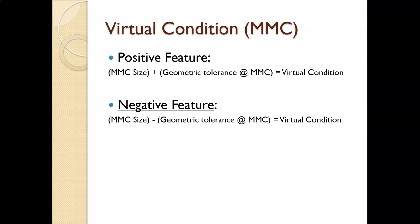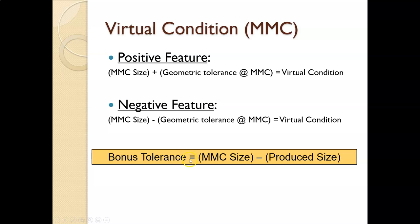The virtual condition formula: for an MMC condition on a positive feature, the MMC size plus the geometric tolerance at MMC equals the virtual condition. For a negative feature (a hole), the MMC size minus the geometric tolerance at MMC equals the virtual condition. The bonus tolerance describes the difference between the MMC size and the produced size — what the part is actually made at.